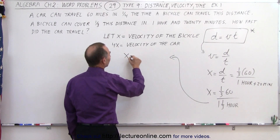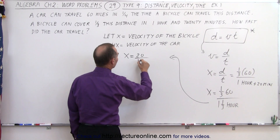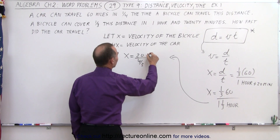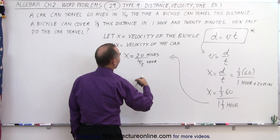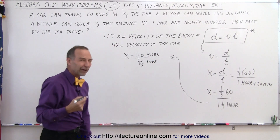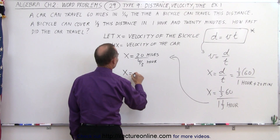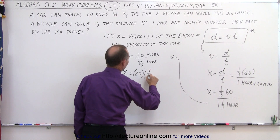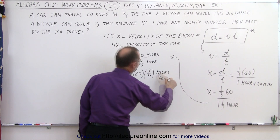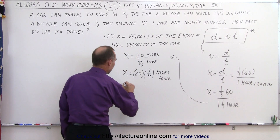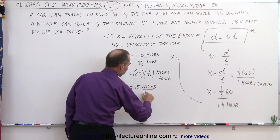x equals 20 divided by four thirds of an hour. Dividing by a fraction is the same as multiplying by its inverse, so x equals 20 times three over four miles per hour. Three quarters of 20 gives us x equals 15 miles per hour.